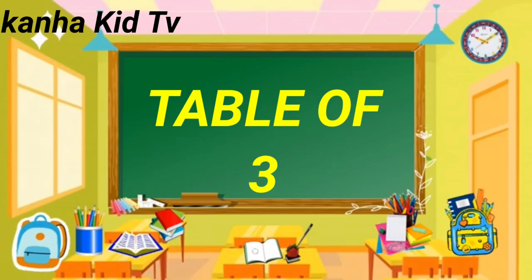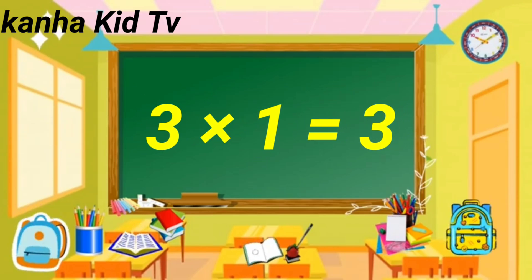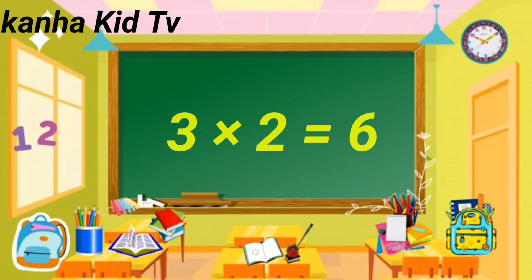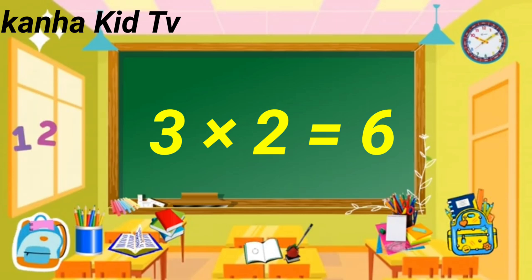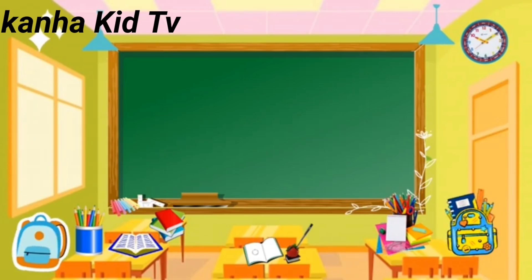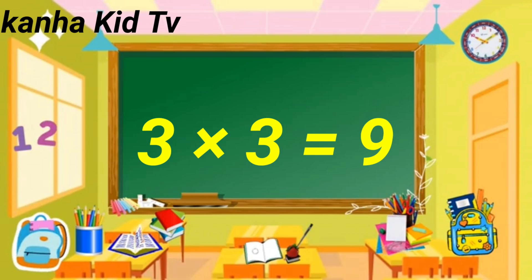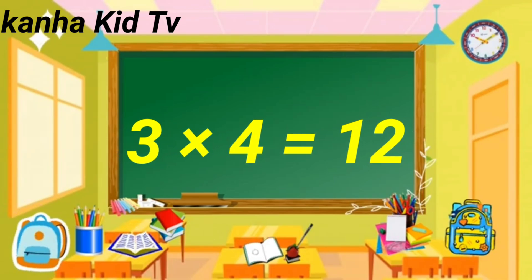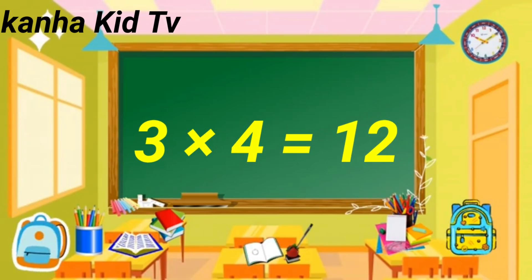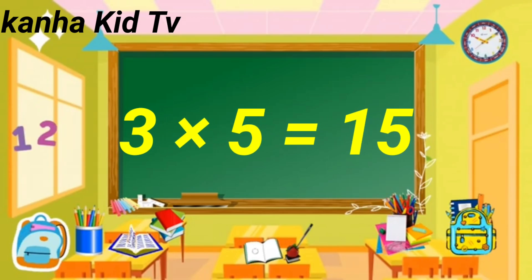Table of Three. Three ones are three. Three twos are six. Three threes are nine. Three fours are twelve.